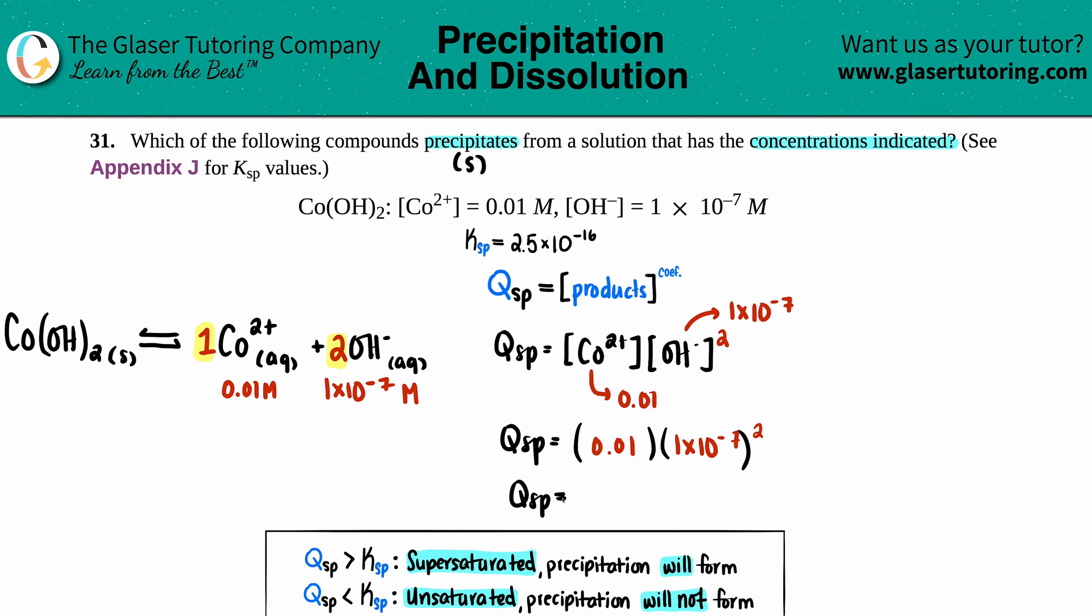You could do it in individual steps. 1×10^-7 squared times 0.01 - I get 1×10^-16. Now I'm just going to compare the two values.